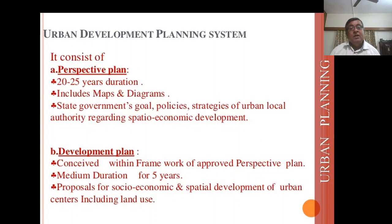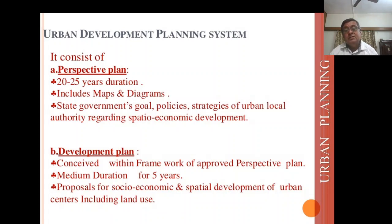Urban Development Planning System: it consists of a perspective plan of 20 to 25 years duration, which includes maps and diagrams and states the government's goals, policies, and strategies of the urban local authority regarding spatial and economic development.